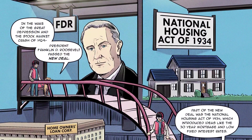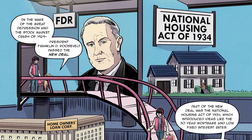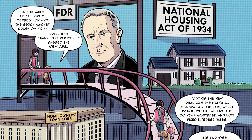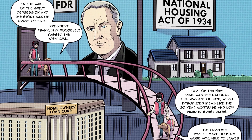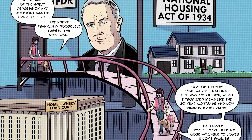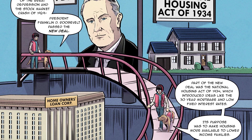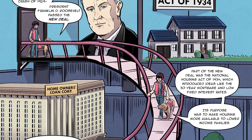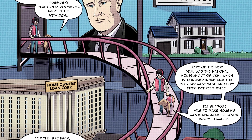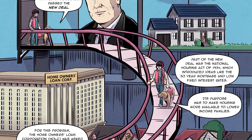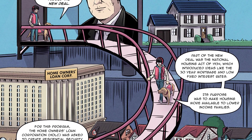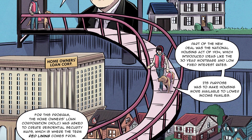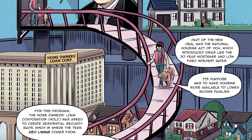In the wake of the Great Depression and the stock market crash of 1929, President Franklin D. Roosevelt passed the New Deal. Part of the New Deal was the National Housing Act of 1934, which introduced ideas like the 30-year mortgage and low fixed interest rates. Its purpose was to make housing more available to lower income families.